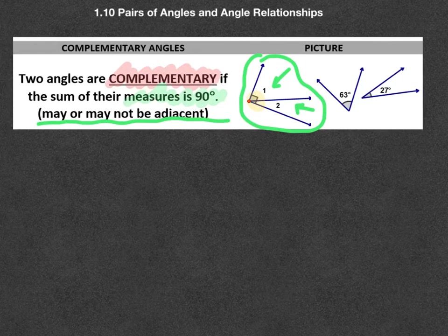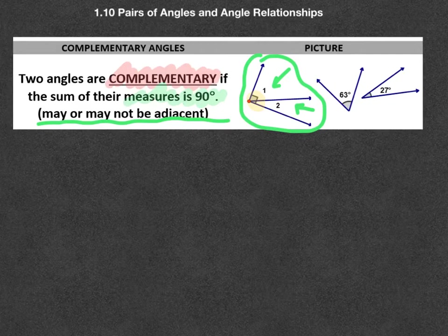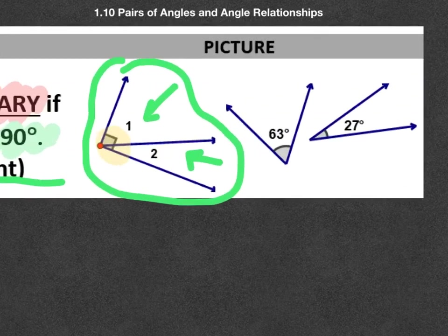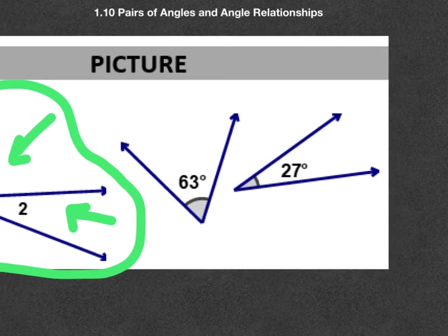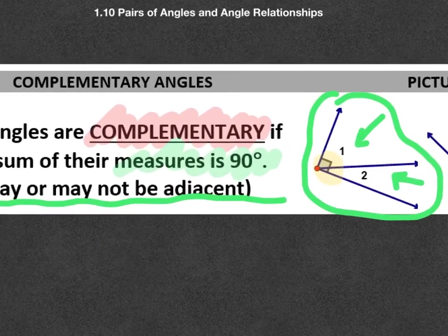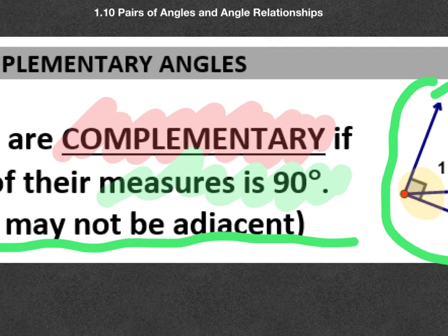So 1 and 2 would be complements there. In the other example, we see how here they are not physically adjacent. But these do add up to 90, 27 and 63 add up to 90. So these are also complements. The word complement is a way to refer to those that add to 90.